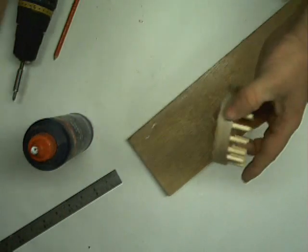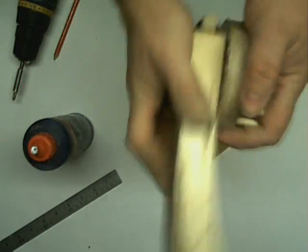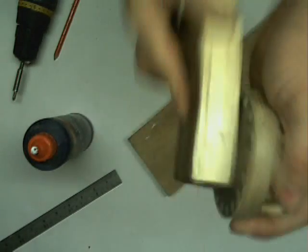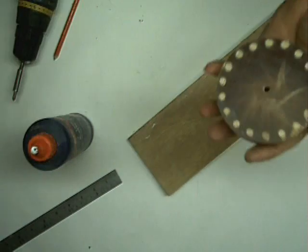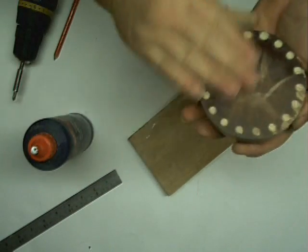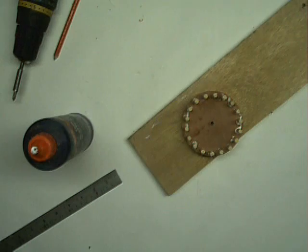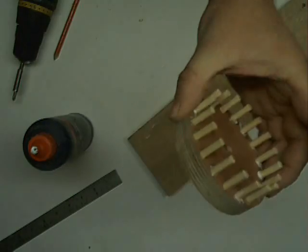Right, that's all them in, and now take the sand block and just remove any high spots from the back. And there we are, one cog done.